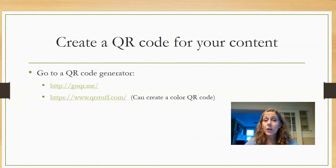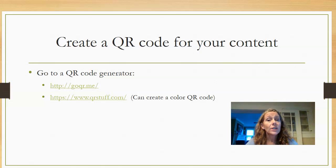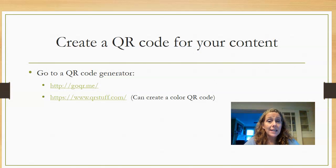So how do you make a QR code? You go to a QR code generator. You can Google one, or you can use one of the ones I have listed here. GoQR.me is super easy — I figured it out in about three minutes, so you can do it.